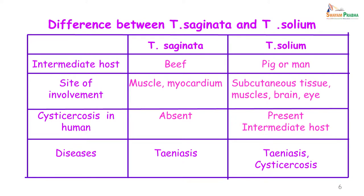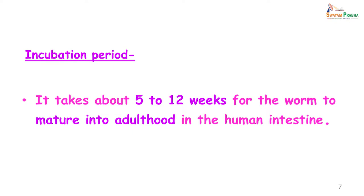The disease caused by Taenia saginata is taeniasis, where it is restricted mainly to the intestine of man, whereas Taenia solium not only causes disease in the gastrointestinal tract but can also produce cysticercosis in other organs of the body. The incubation period is about 5 to 12 weeks from the time the worm matures into adulthood in the human intestine.